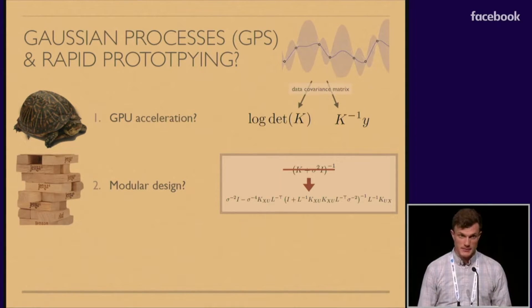So that's what we set out to change in this paper. We want to make building Gaussian process models as fast and simple and easy as building deep learning models.